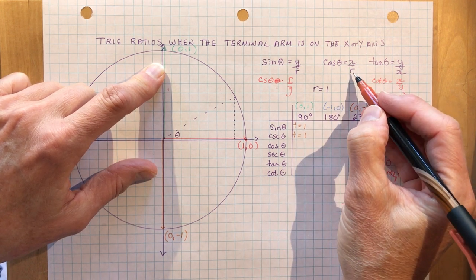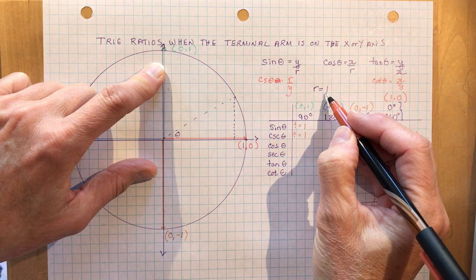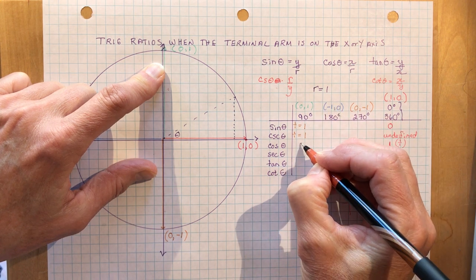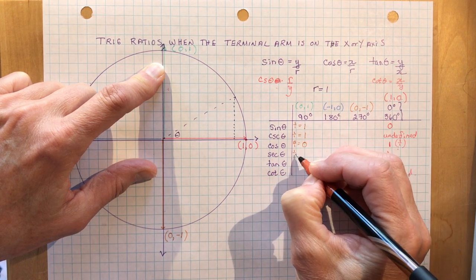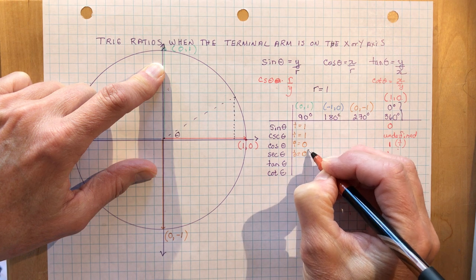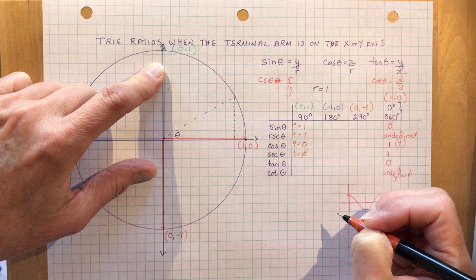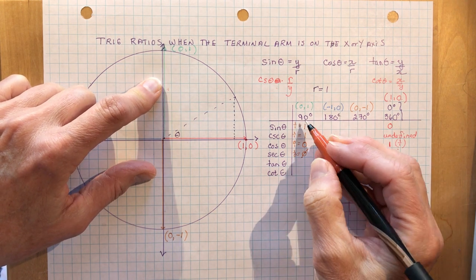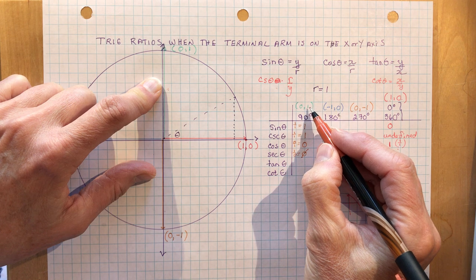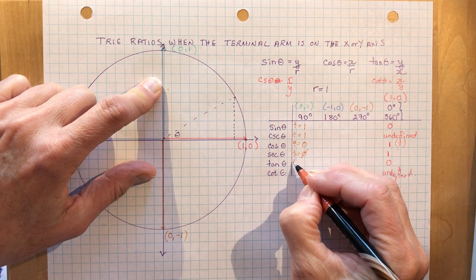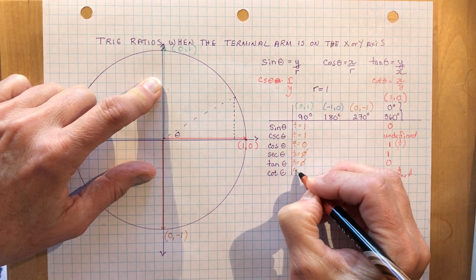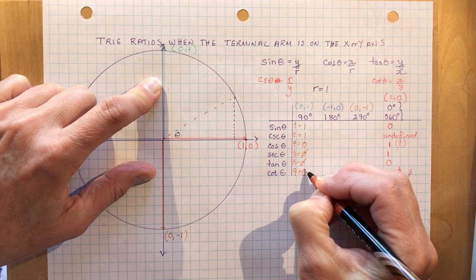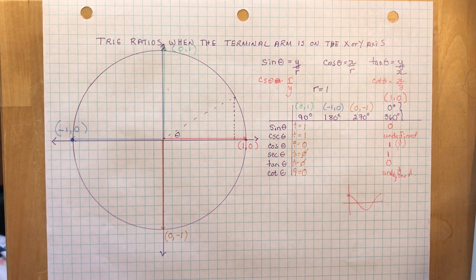The cosine of theta is X over R, so that's 0 divided by 1, which is 0. But the secant is going to be 1 over 0, which is undefined. The tangent is Y over X, so tan is 1 divided by 0 — no solution. But the cotangent is 0 over 1, which is 0. It's all about the X, Y's, and R's.